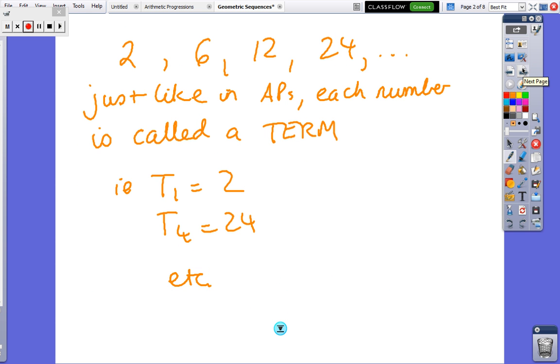So we've got 2, 6, 12, 24. Just like we had in APs, arithmetic progressions, these are going to be called GPs, as distinct from APs. So each of these numbers is called a term. T1 is the first term, T4 is 24, and so on.